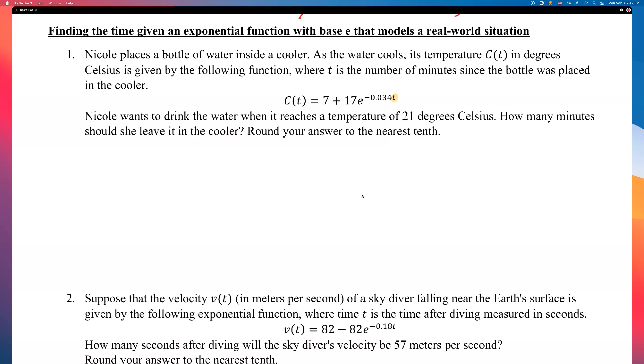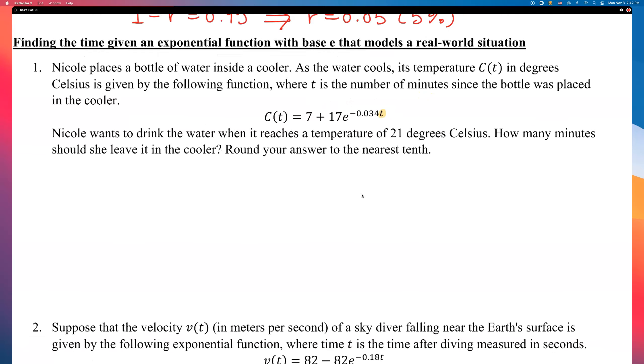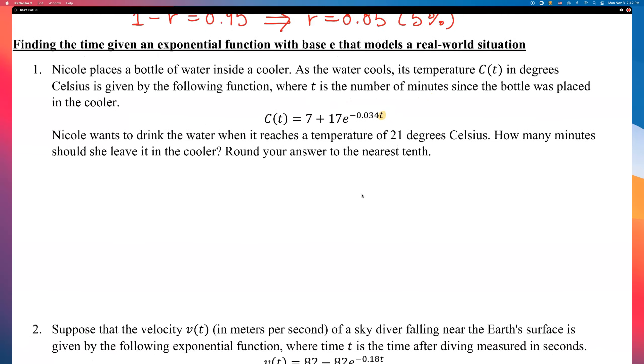Alright. Let's look at example number 1 together. Nicole places a bottle of water inside a cooler. As the water cools, its temperature C(t) in degrees Celsius is given by the following function, where t is the number of minutes since the bottle was placed in the cooler. Okay. So, that's the equation. I see it.